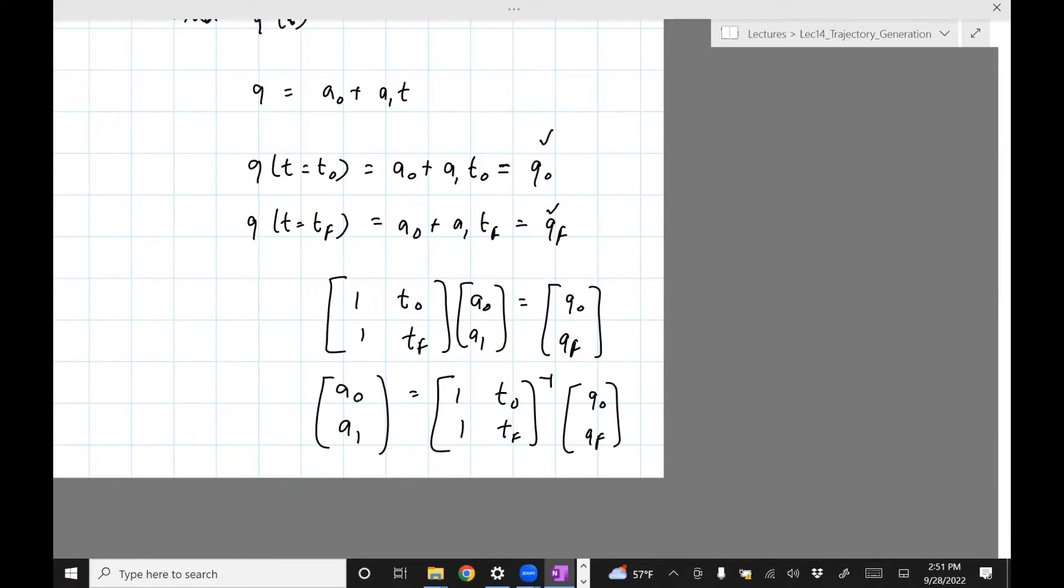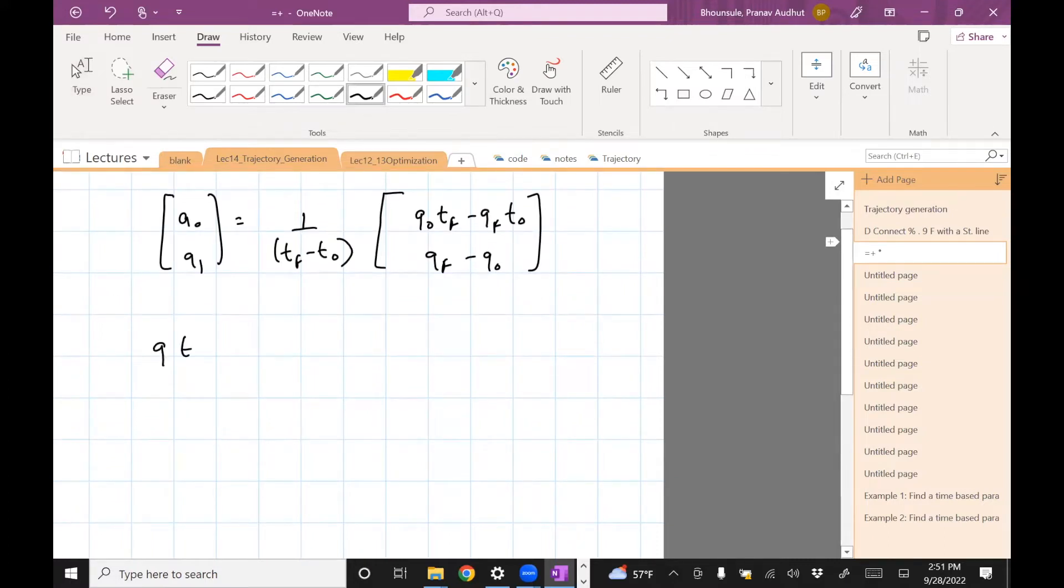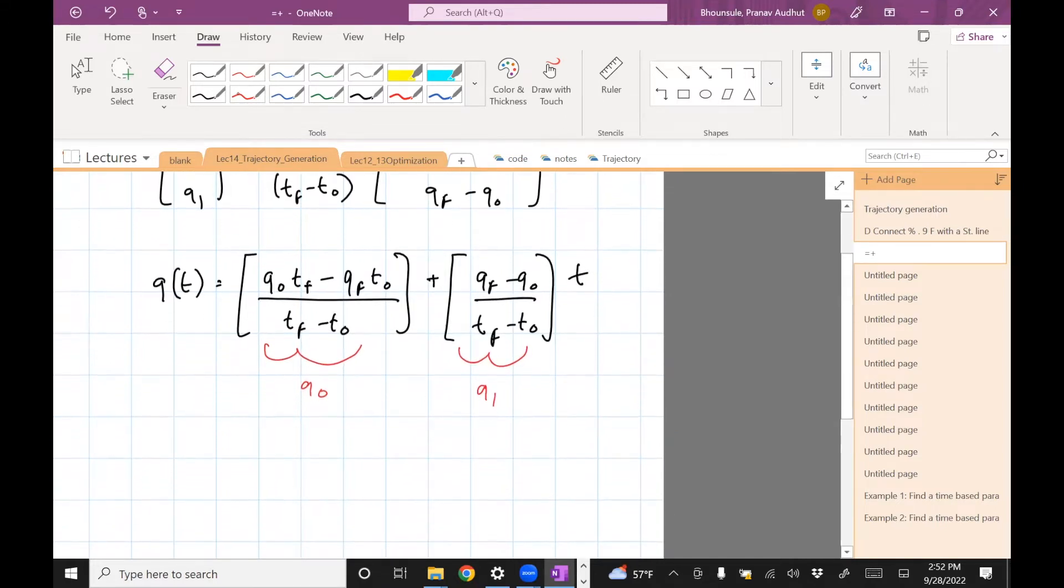Okay, so that's easy to solve because it's just a two by two matrix. It will give you a0, a1 would be, and by the way, I did not do it by hand. I just use sympy to do it. And I'll show you a code which does that. q0*tf minus qf*t0 divided by tf minus t0, and qf minus q0 divided by tf minus t0. And then q of t is, so there's a constant part, which is q0*tf minus qf*t0 divided by tf minus t0, plus qf minus q0 divided by tf minus t0 times t. So you can recognize that this part is a0, this part is a1.